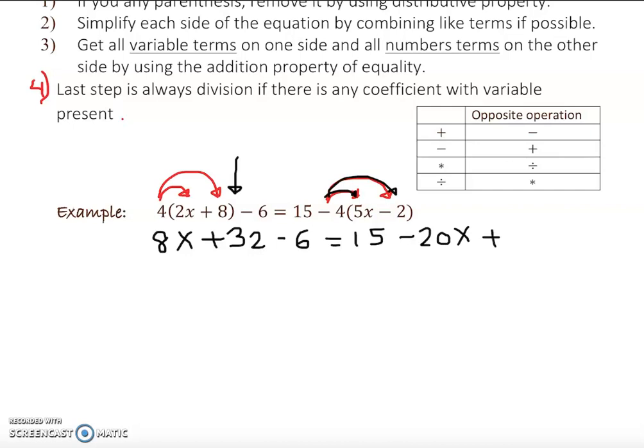Now 4 times 5, so you distribute it, which is negative 20x. And again, we distribute negative 4 times negative 2 is going to give you positive 8. Remember, this is where many of us get off, so instead of positive you guys write negative, which is not correct. Negative 4 times negative 2 should give you positive 8, that's a side note.